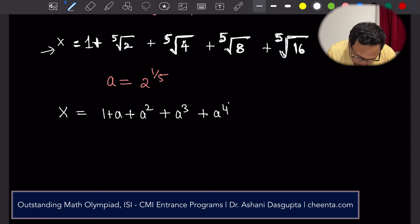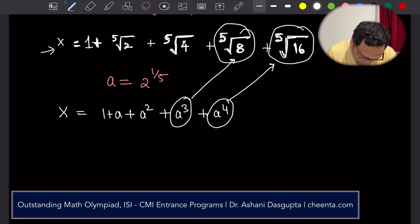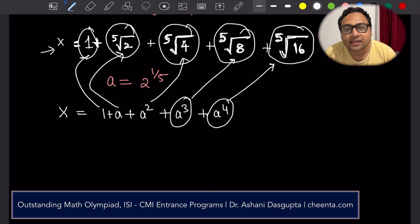Can you tell me in the comment section why is this true? Why is it true that a to the power 4 is 5th root of 16? A cubed is 5th root of 8. A squared is 5th root of 4. Why is this true? Can you explain it to me in the comment section?